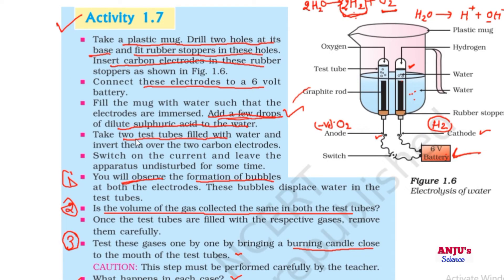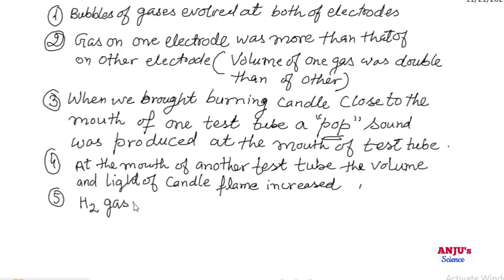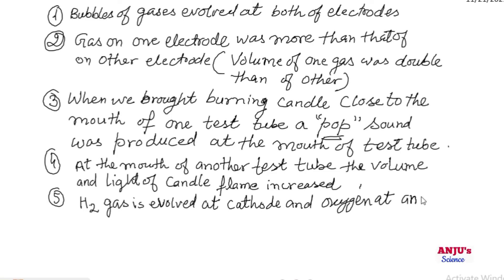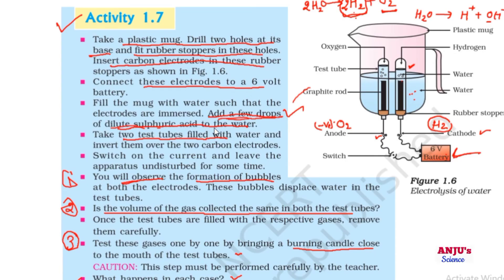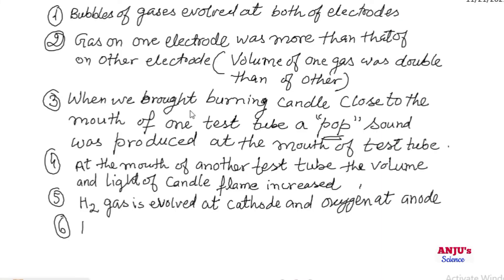At the start of this activity, we added a few drops of dilute sulfuric acid. Why? Because pure water cannot conduct electric current. Adding an acid like sulfuric acid makes the water an electrolyte. In the presence of H⁺ and SO₄²⁻ ions, water becomes capable of dissociation. Sulfuric acid promotes the reaction and increases the rate of decomposition.